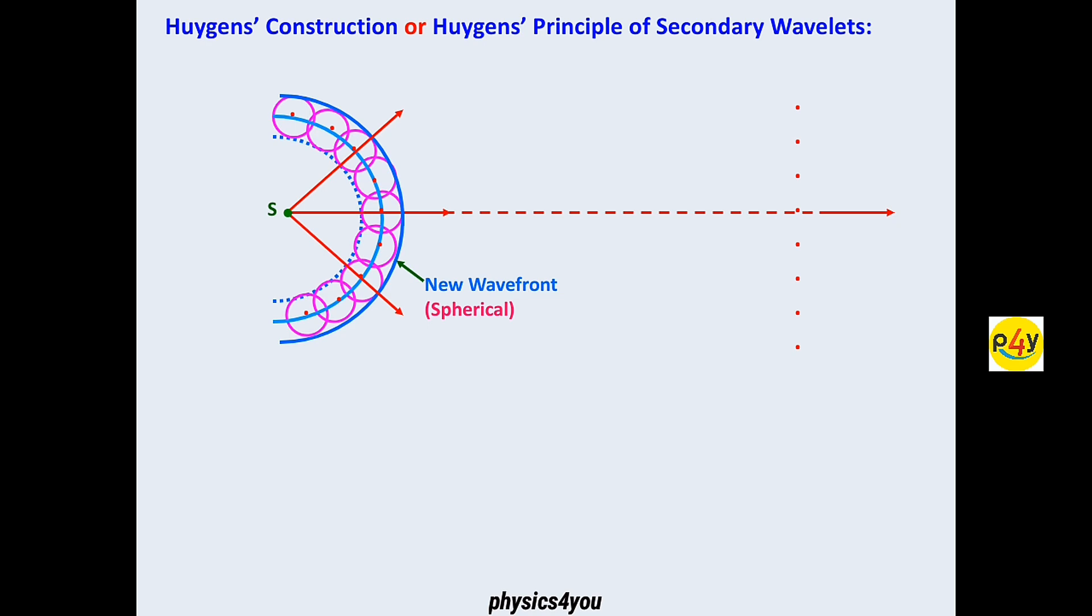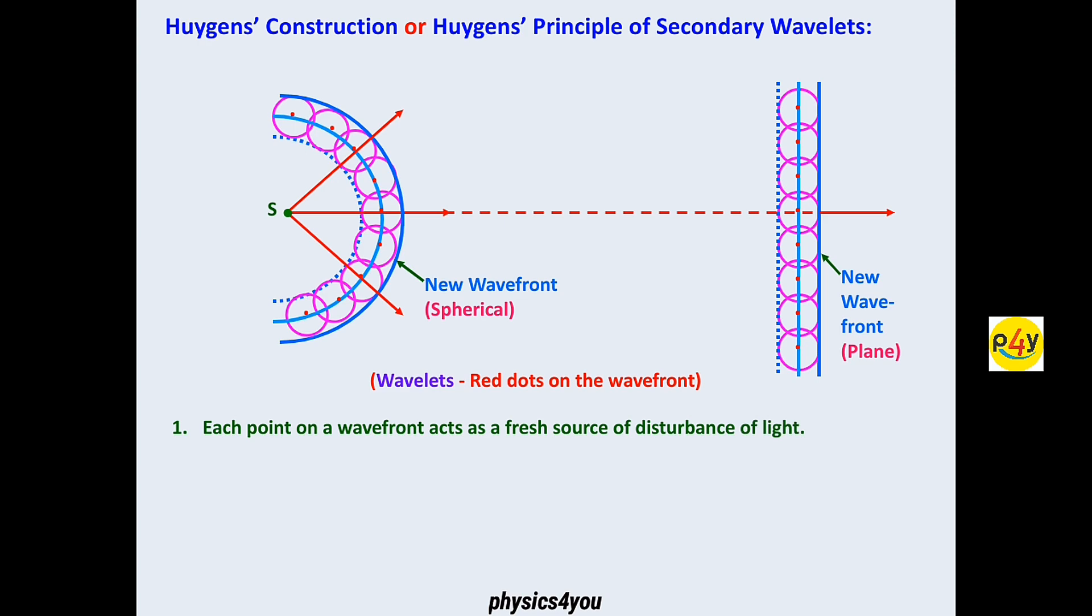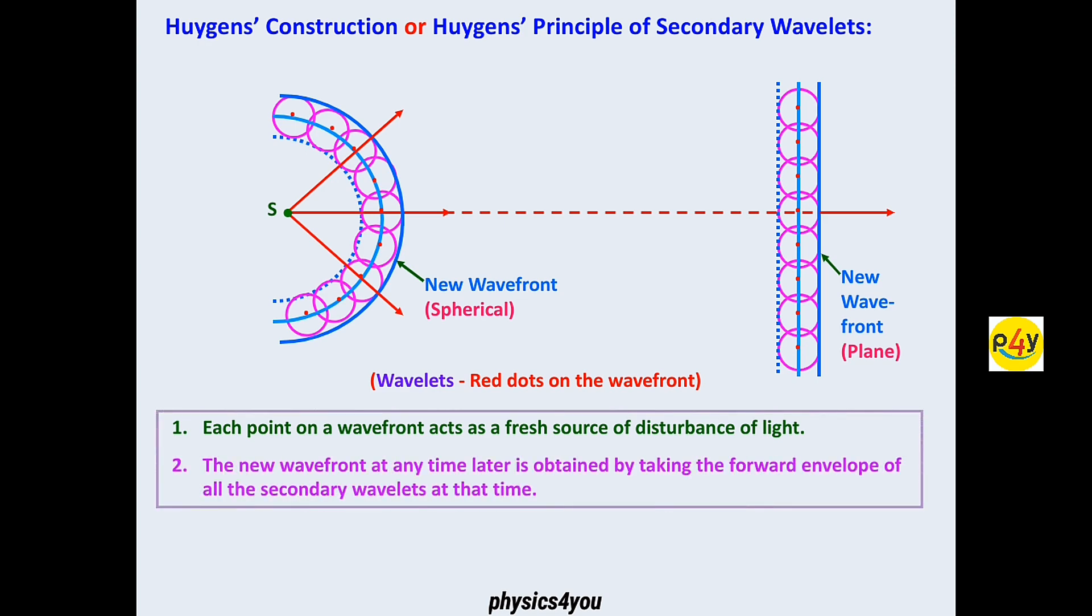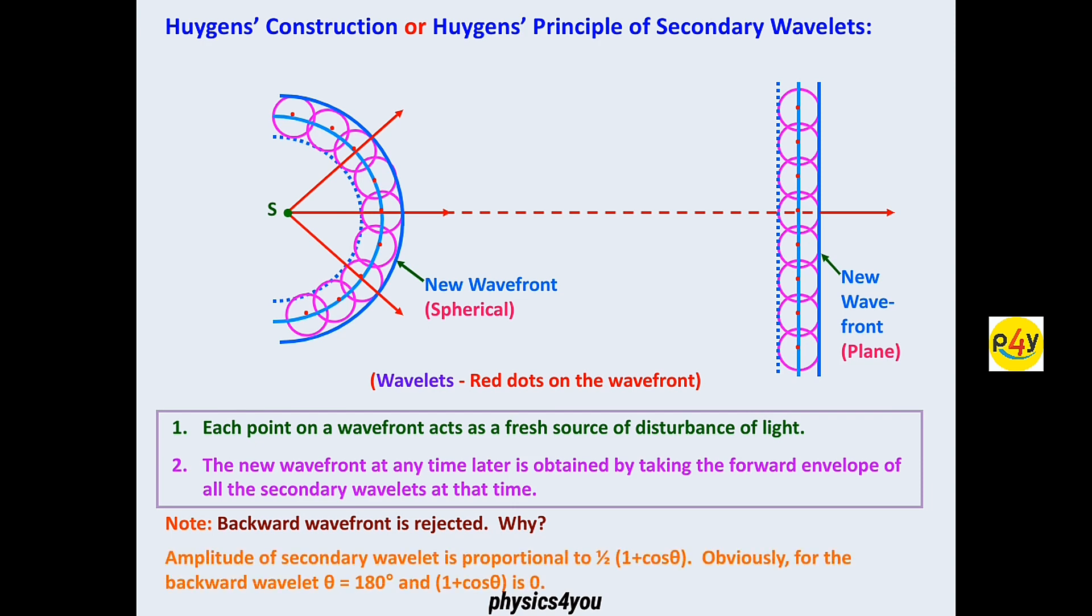We are propagating further. And if this is going to a distance, this will behave as wavefront. Each point on the wavefront acts as a fresh source of disturbance of light. The wavefront works as a secondary source. Because of pressure and radiation pressure, light is in backward direction.